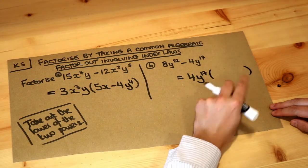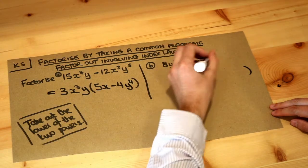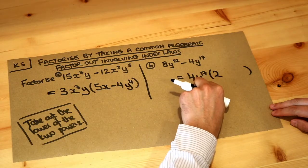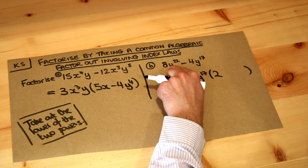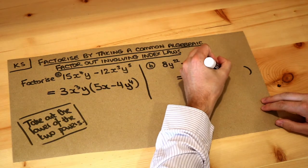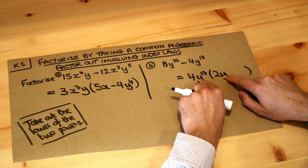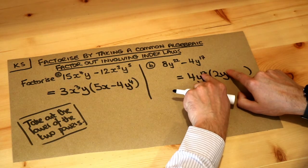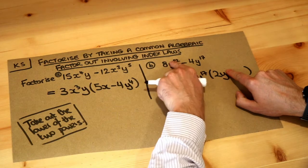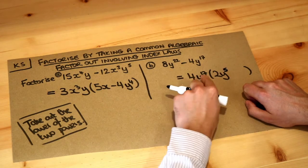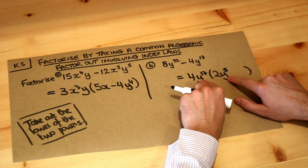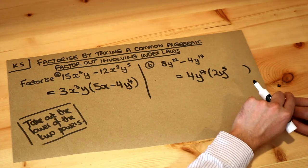Now 4 times what is the 8? It's 2. y to the 17 times what is y to the 22? Well, thinking about laws of indices, because we're multiplying these together we would add the indices: 17 plus what is 22? It's 5. So y to the 17 times y to the 5 is y to the 22.